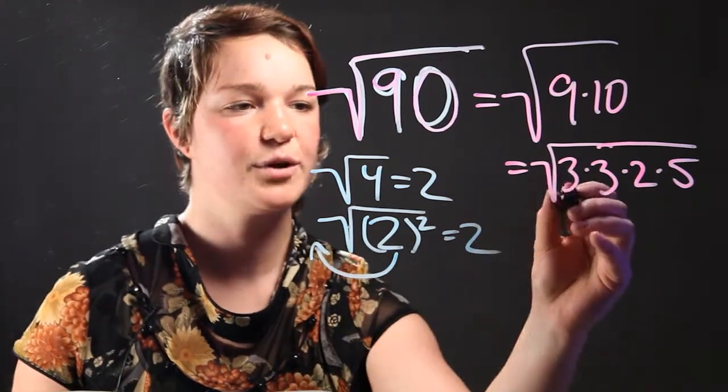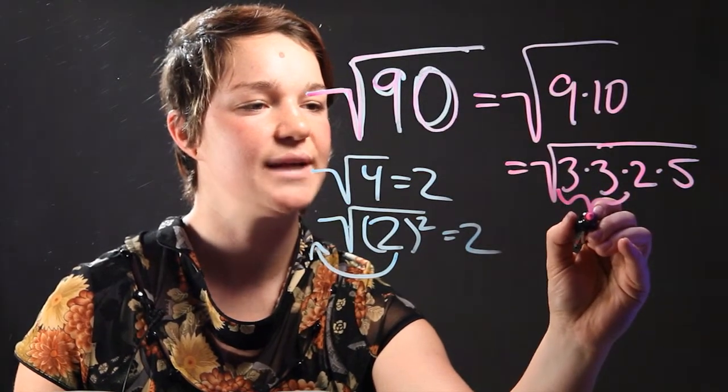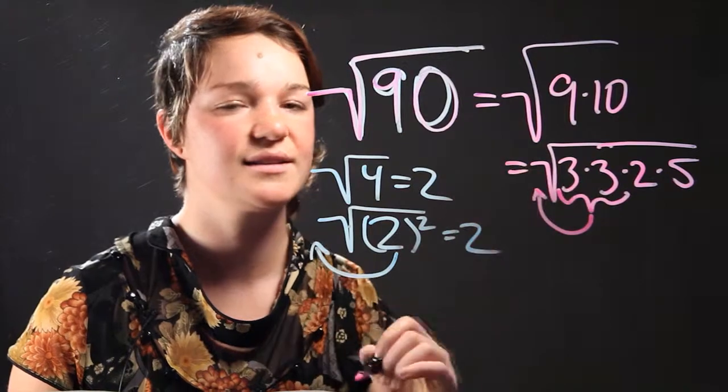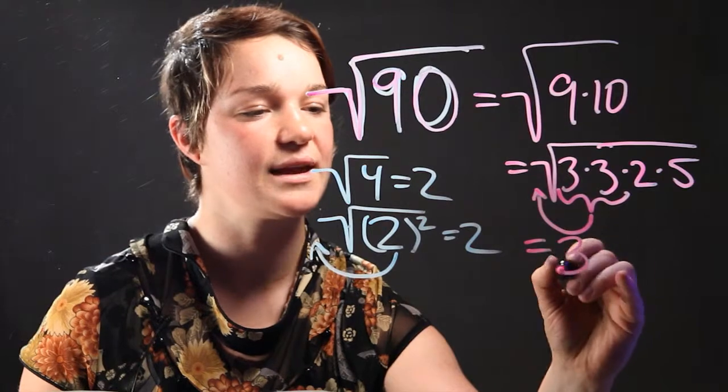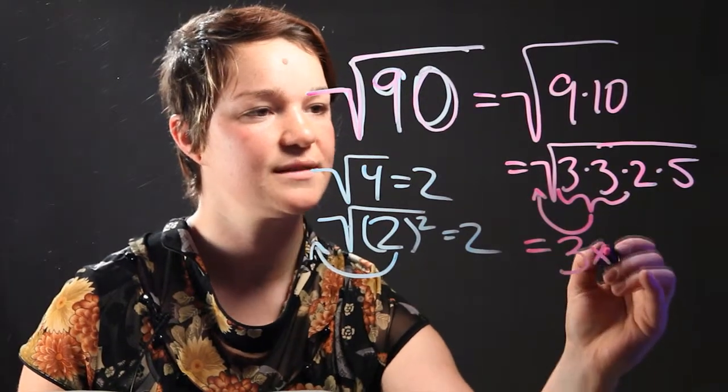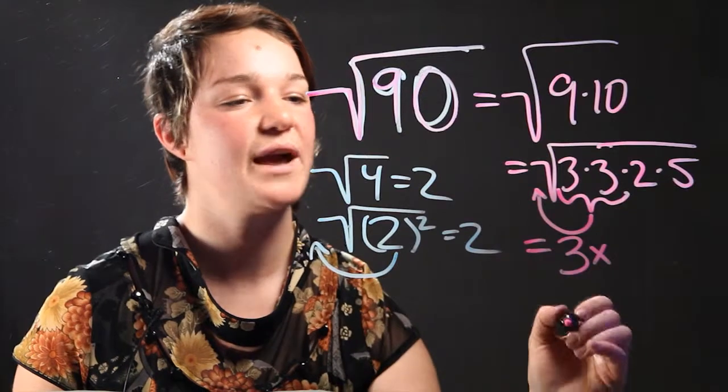When you have a perfect square within a radicand, you can eliminate it by taking it outside of the expression. So this expression is actually the same as 3 times 2 times 5 within the radicand.